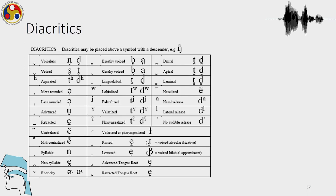These are the diacritics we just talked about: for voiceless sounds which can be produced as voiced, and for voiced sounds which can be de-voiced. There are also symbols for aspiration, more rounding, less rounding, advanced, retracted, centralized, mid-centralized, and also syllabic and non-syllabic — these are vowel diacritics. For consonants, we have breathy voice, creaky voice, linguolabials, labialized, palatalized, velarized, pharyngealized — these are secondary articulations. Also symbols for dental, apical, laminal, nasalized, nasal release, lateral release, and no audible release.